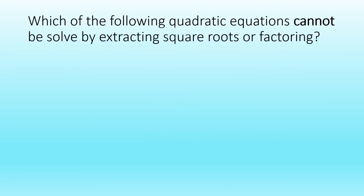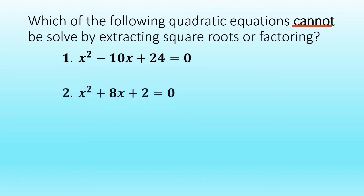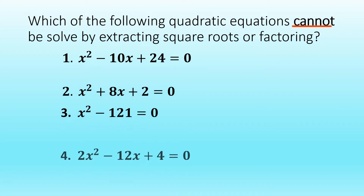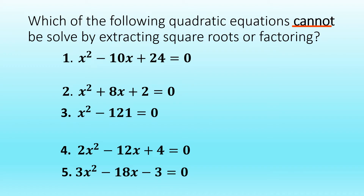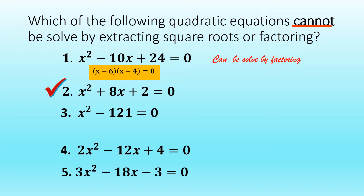Which of the following quadratic equations cannot be solved by extracting square roots or factoring? Number 1: x squared minus 10x plus 24 equal to 0 can be solved by factoring. Its factors would be quantity x minus 6 times quantity x minus 4 equal to 0. Number 2: x squared plus 8x plus 2 equal to 0 cannot be solved by extracting square roots or factoring. Number 3: x squared minus 121 equal to 0 can be solved by extracting square roots, so its roots would be x is equal to positive or negative 11.